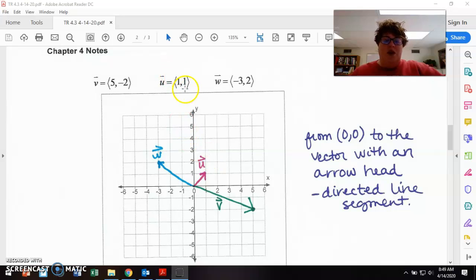And then U is one, one, vector one, one. So it goes up to one, one and stops from your initial point zero, zero. And then W negative three, two goes from the initial point to negative three, two and stops. So the key things to remember when you're graphing vectors is they go to that vector point and stop. They do not go through it like a line does. So it just goes up to that point and stops and it has an arrow head on the end.